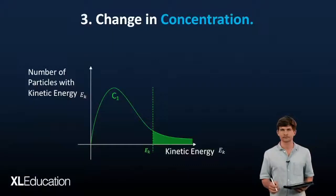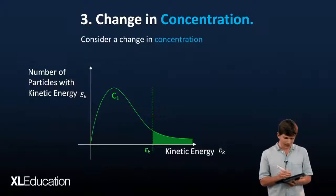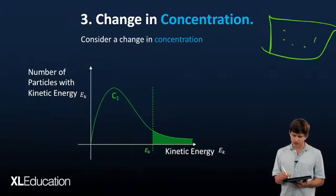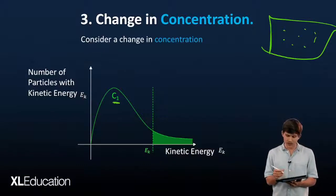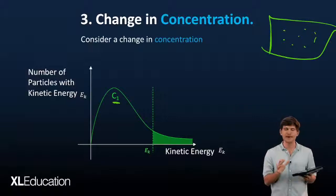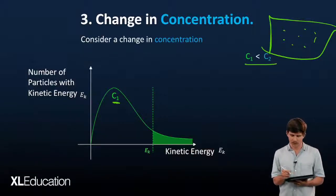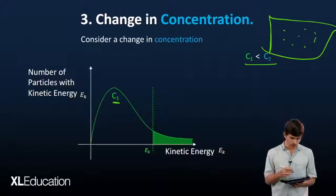Consider a change in concentration. We're looking at the same set of particles with concentration 1. Concentration is how closely packed they are. Now, if C1 is less than C2, we increase the volume or pressure of the system. That means we push them together.